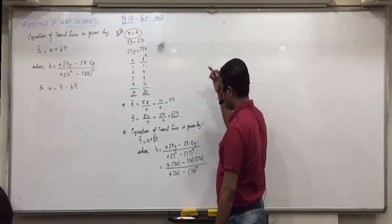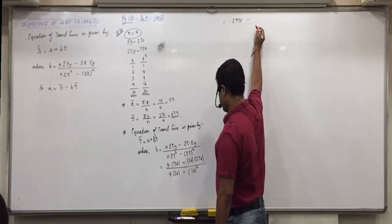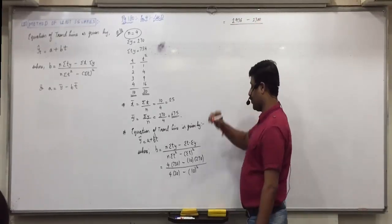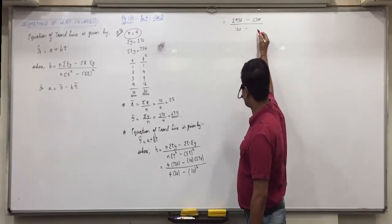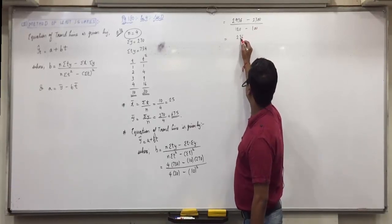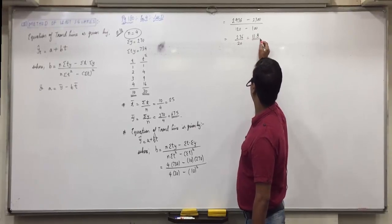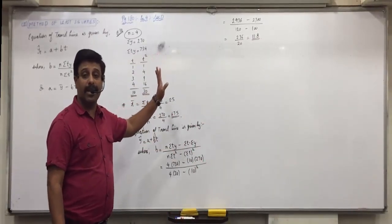2936. 734 into 4. 2936. Minus 2700. Minus 10 into 270. 2700. Minus 120. 4 into 30. 120. Minus 100. 10 squared. That is 100. So, 236 upon 20. 11.8. So, is everyone clear with this? Any confessions until here?